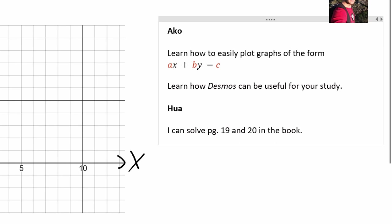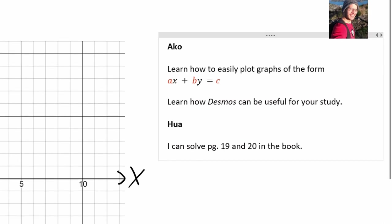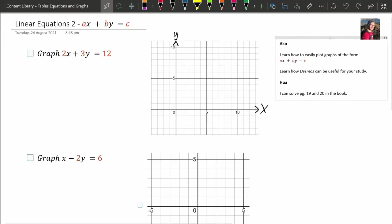Your success criteria is to solve those pages in the book. After watching these two videos, you should be able to solve all the pages. But of course, send me emails if you're stuck. I've got two questions for you. First one is graph 2X plus 3Y equals 12. So how do you start on this? What is a useful secret?